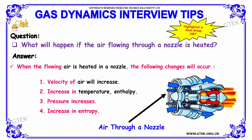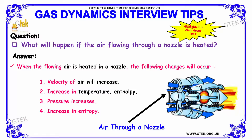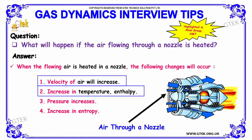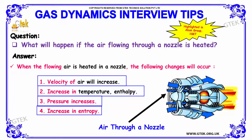Next question: what will happen if the air flowing through a nozzle is heated? When the air flowing through a nozzle is heated, the following changes will occur: the velocity of air will increase, there will be an increase in temperature and enthalpy, pressure increases, and there will also be an increase in entropy.